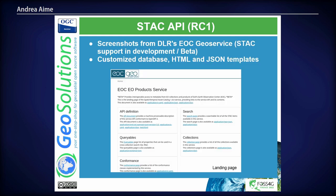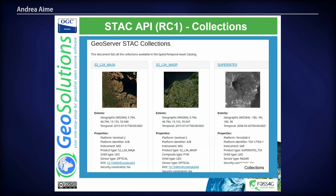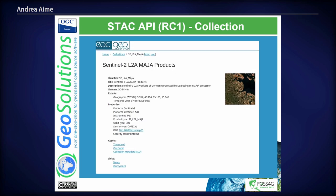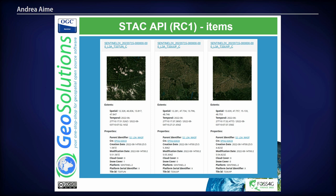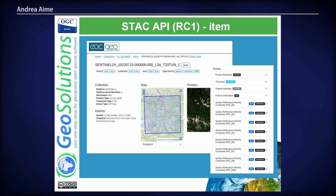Here are some screenshots I took from the DLR implementation of our STAC API. In GeoServer, we have templates that you can use to control both the JSON and the HTML representation of everything — landing page, collections, items, and so on. DLR has done a very good job at customizing it. Here is the page showing available collections. I can drill down into one to get detail about a collection, then drill down further to get a list of items in that collection, and eventually get into a single item with a map showing the footprint, the thumbnail, and all the assets for download or direct usage, since they might be linking to a cloud-optimized GeoTIFF that I could stream directly.